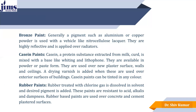Next is bronze paint. Generally a pigment such as aluminum or copper powder is used with a vehicle like nitrocellulose lacquer. They are highly reflective and applied on radiators. Casein paints — casein is basically a protein substance extracted from milk. Curd is mixed with a base like whitening and lithophone. They are available in powder or paste form, used over newer surfaces, walls or ceilings. A dry varnish is added when these are used over the exterior surface of a building. Casein paints can be tinted to any color.